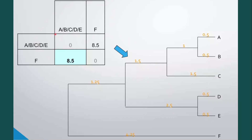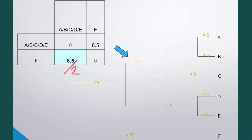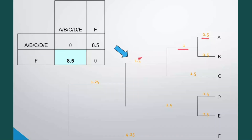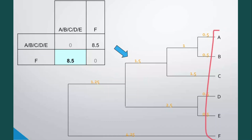For the final distance matrix, we have the ABCDE cluster and only F remaining. Comparing ABCDE with F: we compute A-F plus B-F plus C-F plus D-F plus E-F divided by 5, which gives 8.5. Dividing 8.5 by 2 gives 4.25. We write 4.25 for both lines to F. Subtracting all previous branch entries from 4.25 gives 1.25 for the final connecting branch.